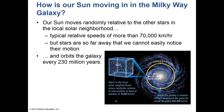Our sun is in an arm of the Milky Way galaxy, and the Milky Way galaxy is also rotating around a common point — possibly a black hole. That rotation takes 230 million years to complete once.